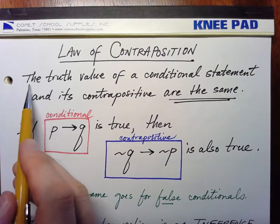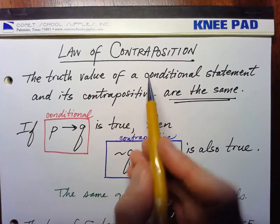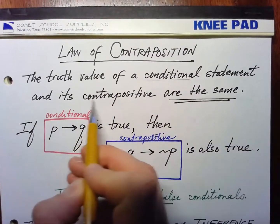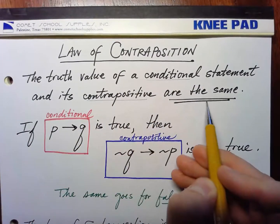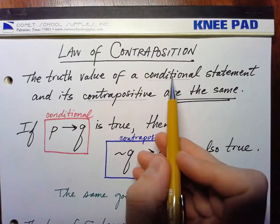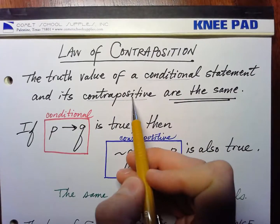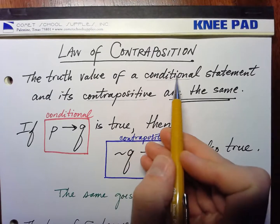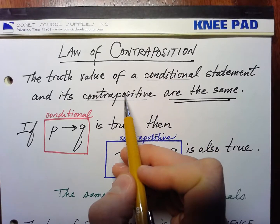The law of contraposition says that the truth value of a conditional and its contrapositive are the same. So if a conditional is true, then its contrapositive is true. If a conditional is false, then its contrapositive is false.